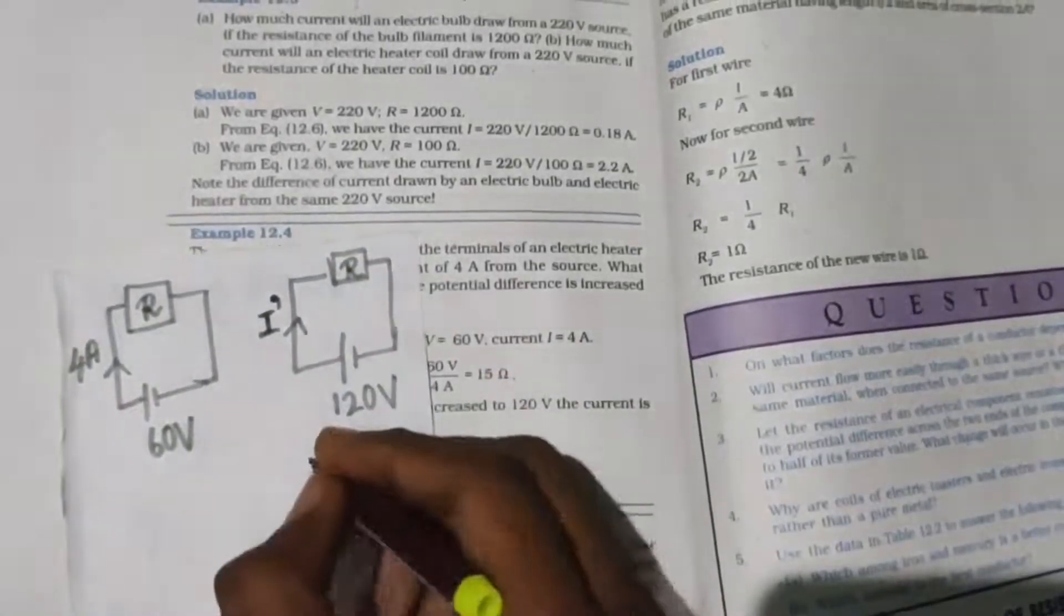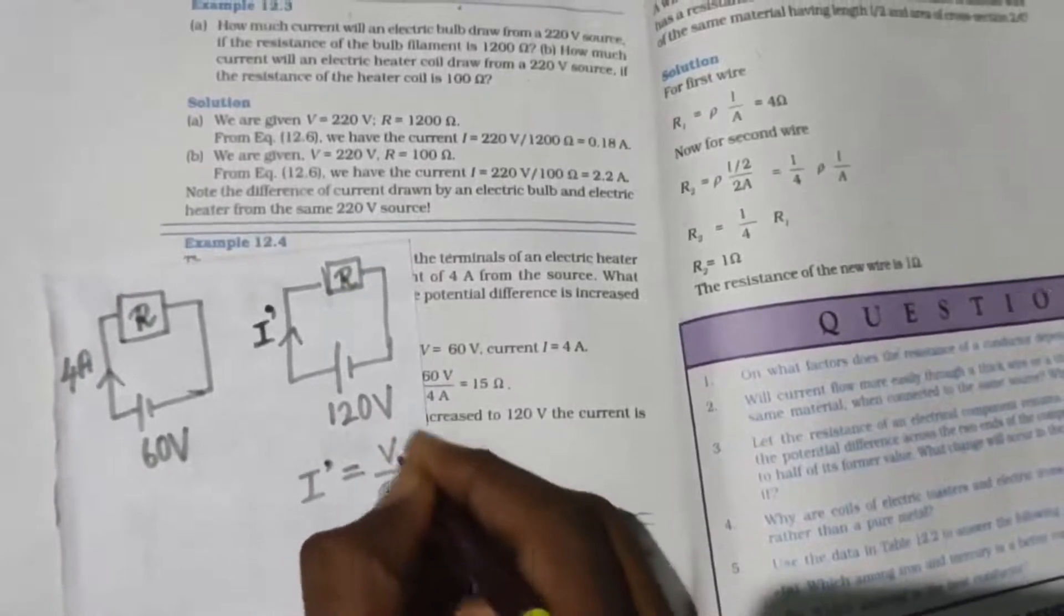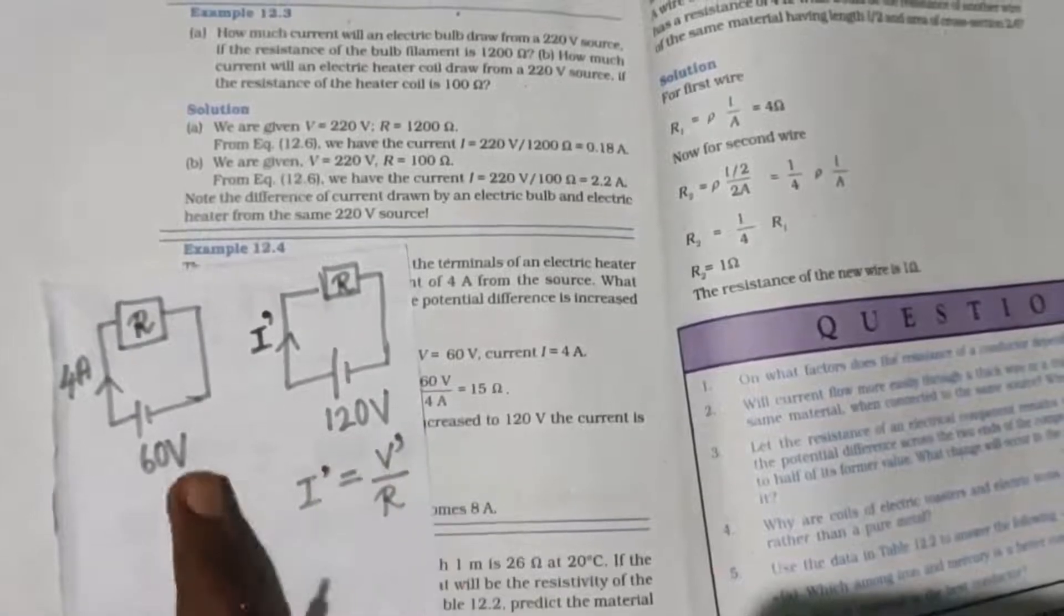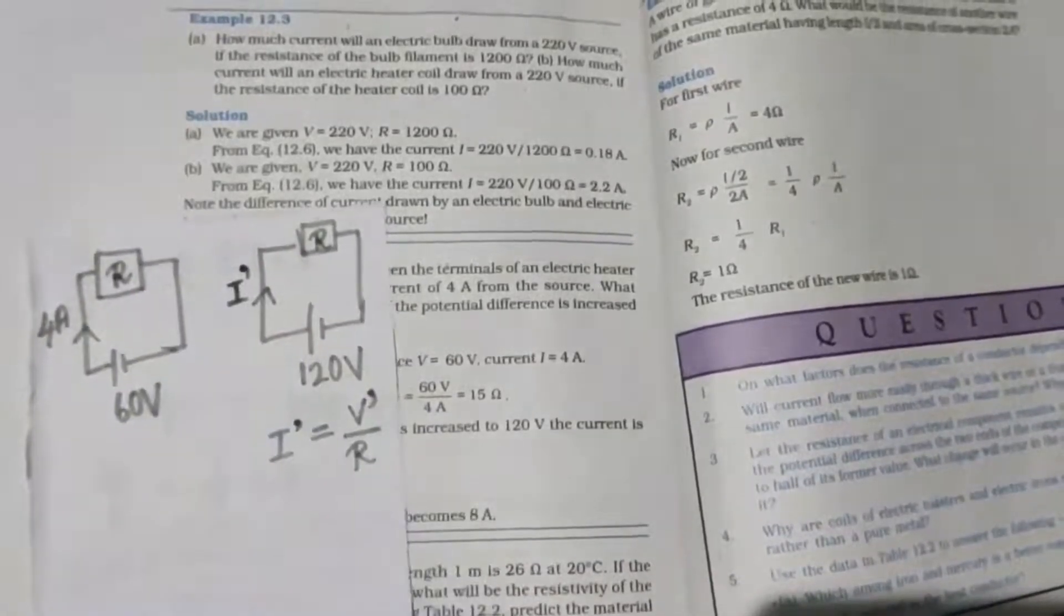If you know the value of R, I dash you can find. It is equal to V by R, right? So V dash by R - you can find the second voltage. Now if you find the R value using the first case, you can find it easily.